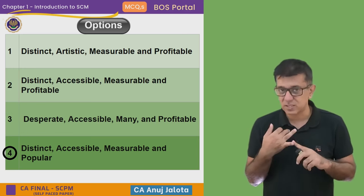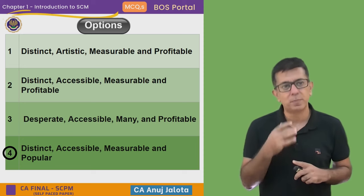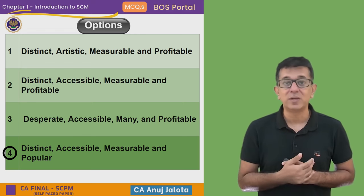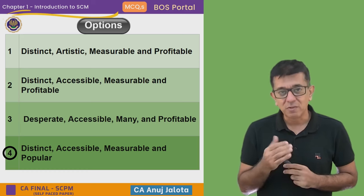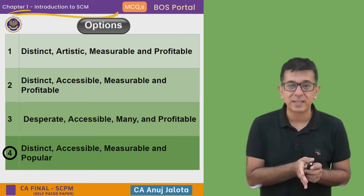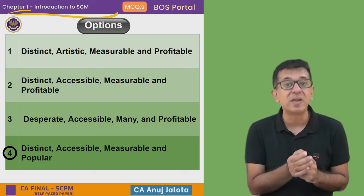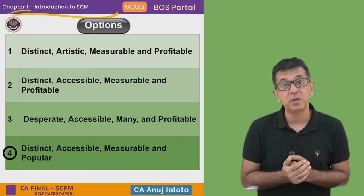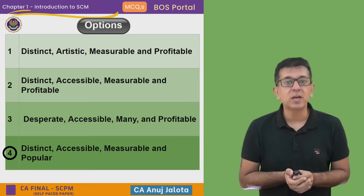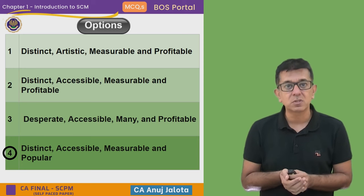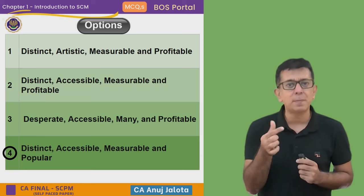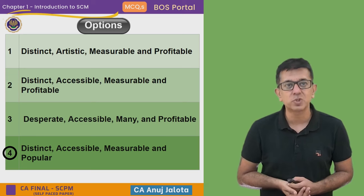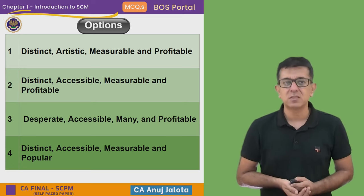Option four has distinct, accessible, and measurable — which are all correct — but it also has 'popular.' Sometimes market segments might not be popular but are still very profitable, because very few customers might be buying heavily priced products. For example, designer clothes don't have many customers, but the paying capacity of each customer is very high. So it may not be a popular segment, but it is still a profitable one. Therefore, out of the four options, the answer should be option two.